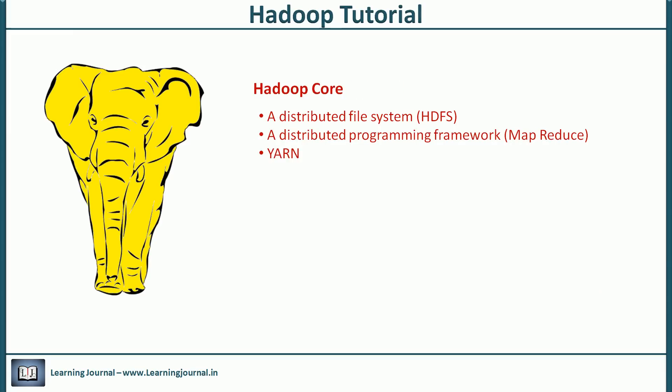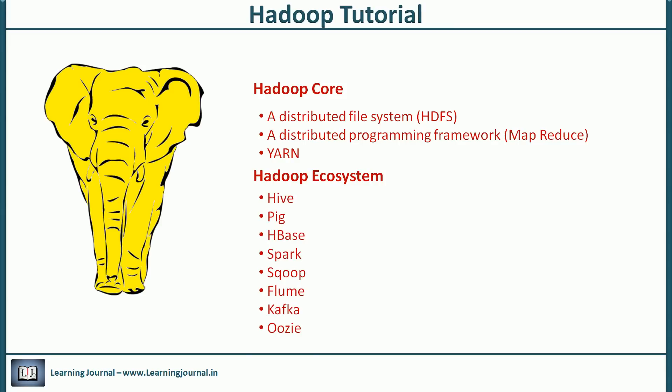We know about Hadoop core components, but in today's world when people refer to Hadoop, they don't just mean these three key elements. They refer to a set of tools that work on top of or around Hadoop core — we call it the Hadoop ecosystem. There is no precise definition of what comes under the Hadoop ecosystem, but without going into that debate, some widely considered ecosystem tools include Hive, Spark, and Kafka, which are the three most widely adopted components from this list.